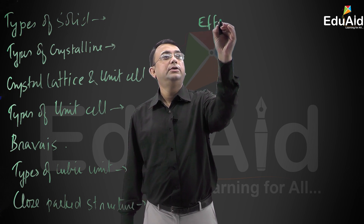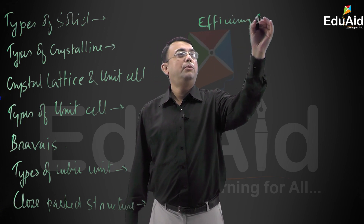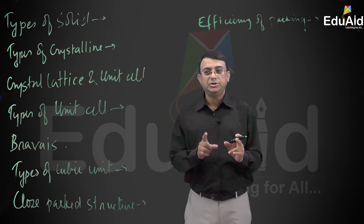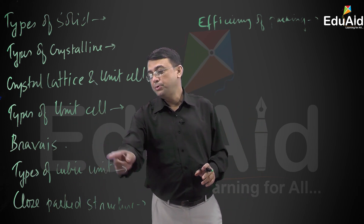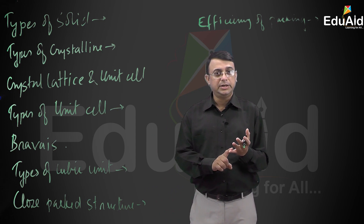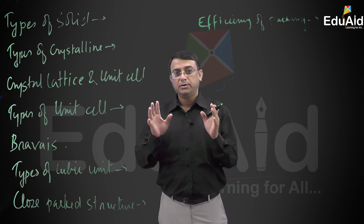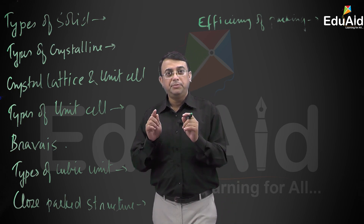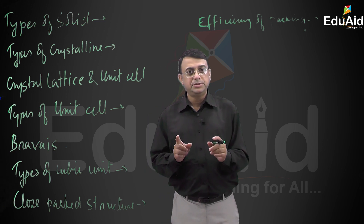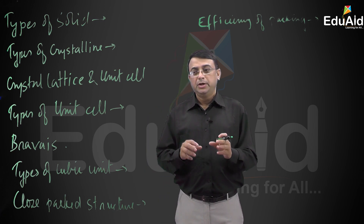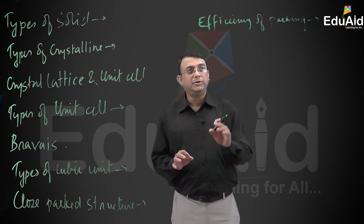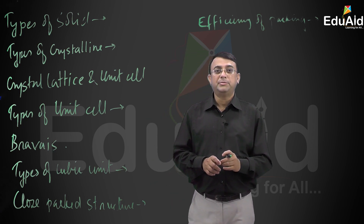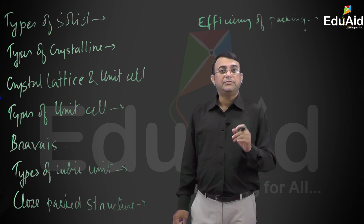Efficiency of packing has been studied in three types of cubic unit cells: primitive, body-centered, and face-centered. In body-centered cubic, the packing efficiency is 68%. In face-centered cubic, which has got the maximum efficiency, it has got 74% packing efficiency.